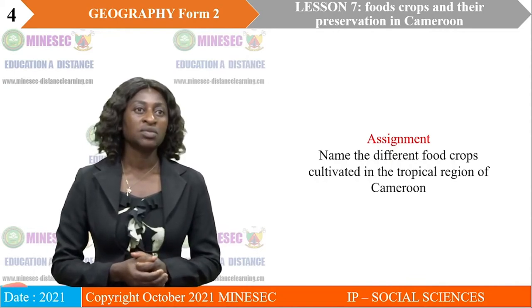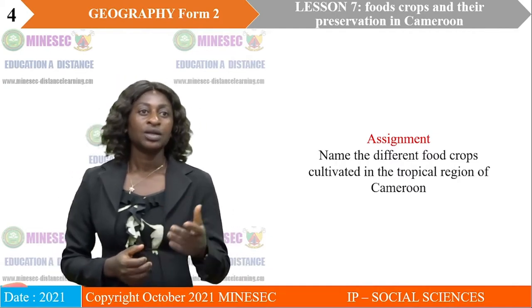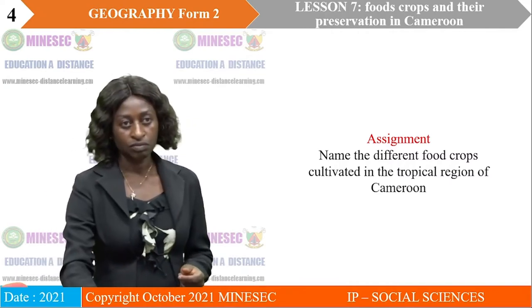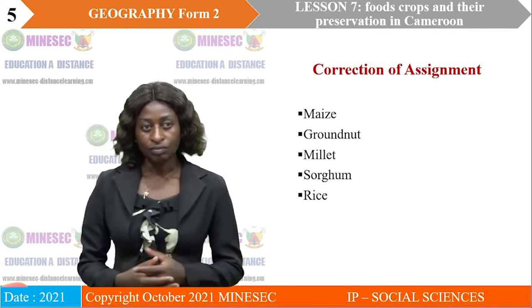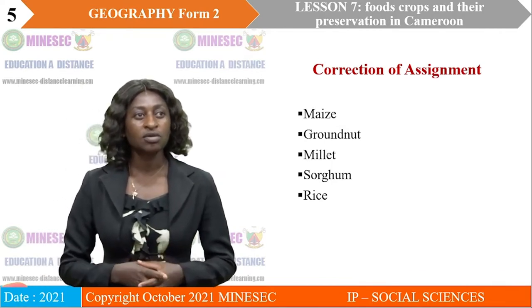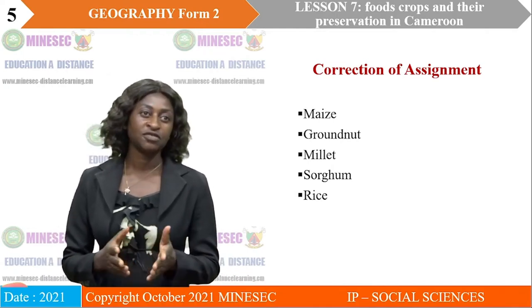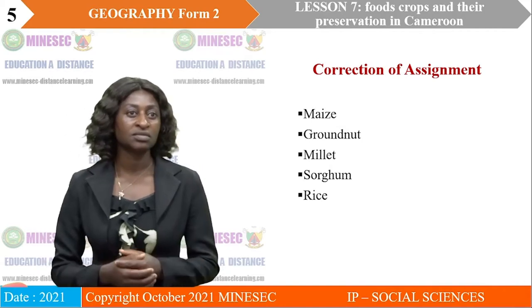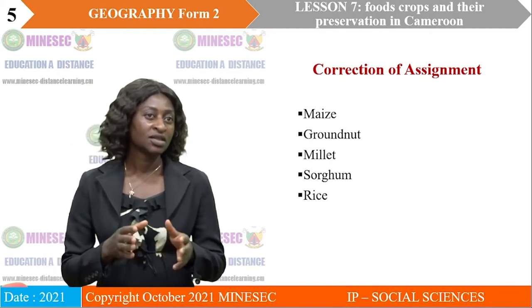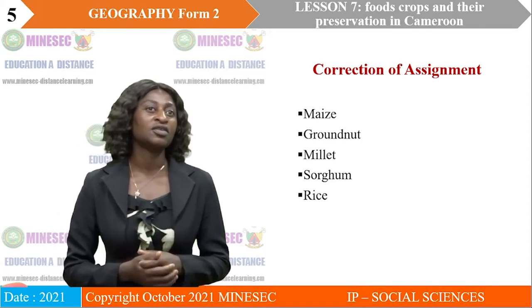Let's look at our assignment from last class. The question: name the different food crops cultivated in the tropical region of Cameroon. The food crops cultivated in the tropical region include Nase, groundnuts, millets, sorghum, and rice. We should realize that these are mostly cereal crops cultivated in this area of the country.